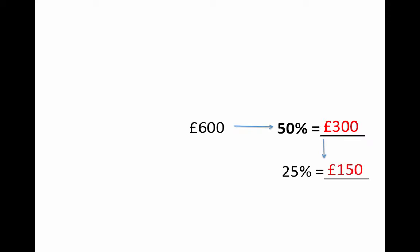If you know 50% and 25%, then you can add those two percentages together to find 75%. That also means you need to add the sums of money together—£300 plus £150. This can be done through a variety of methods, including the column method or just mentally. Alternatively, you could have tripled 25% to also find 75%.